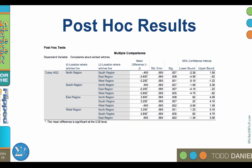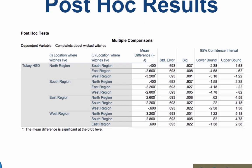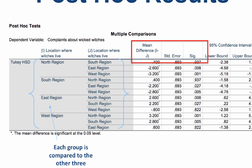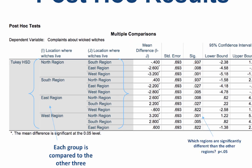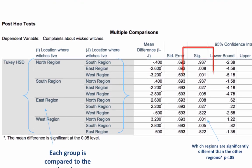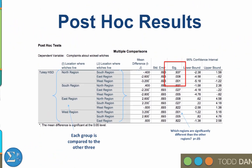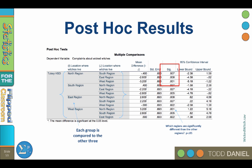So one treatment is different than the other treatments, but we need the post hoc to find out which one. This is a table of post hoc results. Each region is compared to the other three regions. You see the mean difference, the standard error of the mean difference, and the significance value for each comparison. If a region differs by less than .05 in the Sig column, those differences are statistically significant. We can see that the north region is not different than the south region (p = .937), but north is different than both east and west regions, with probabilities of .008 and .001. We could continue doing these comparisons, or we could evaluate the homogeneous subsets.